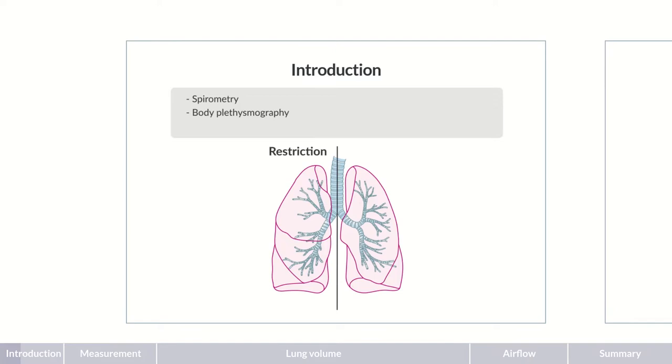These tests can be used to differentiate between restrictive and obstructive lung diseases. Restrictive lung diseases are characterized by the impaired ability of the lungs to expand fully. An example is pulmonary fibrosis.